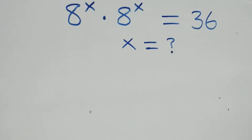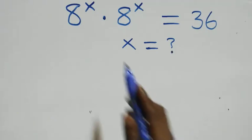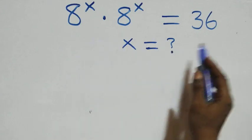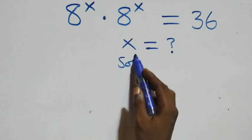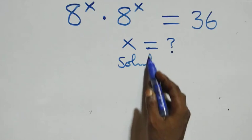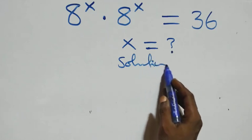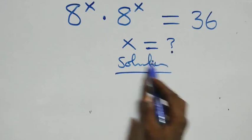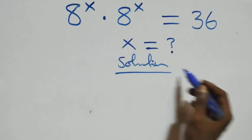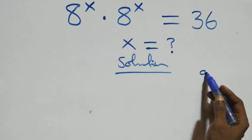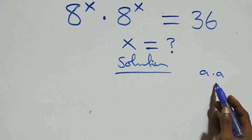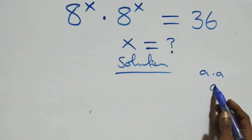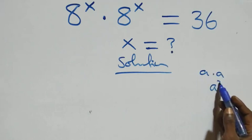Hello, you're welcome. Here's how to solve this nice exponential equation. From the solution, when we have a times a — the same thing multiplying — we can write it as a squared.